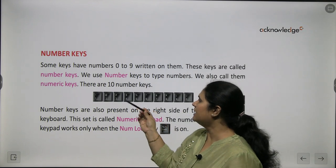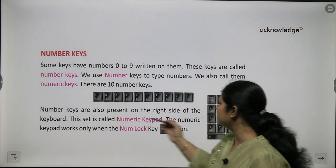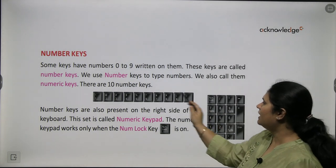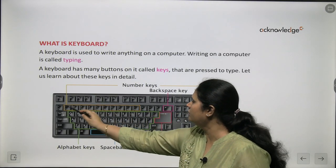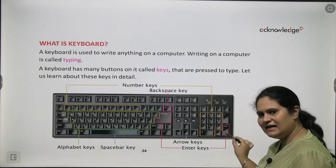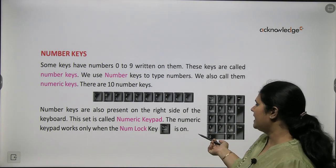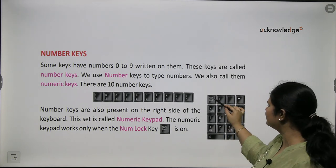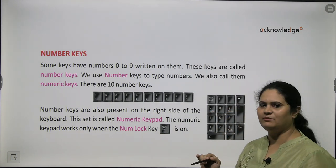We use these keys to type numbers, and we can also call them numeric keys. There are 10 of these — a total of 10 numbers. These keys are also present on the right side of the keyboard. There are two sets of numeric keys: one is on the top, and one more set is on the right side, called the numeric keypad. It works only when the numlock key is on.